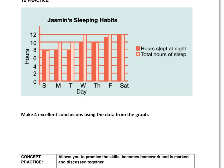All right. So to practice. Here we have Jasmine's sleeping habits. We have all of her days. We have the number of hours up to 12 hours. And we have the dark filled in bars being the hours she slept at night. And the lighter not filled in bars, the total hours of sleep. So perhaps sometimes she's doing some sleeping during the day. Maybe she's having some naps.